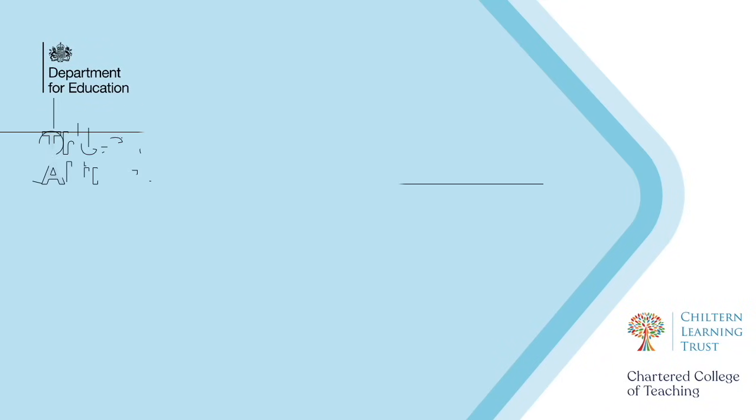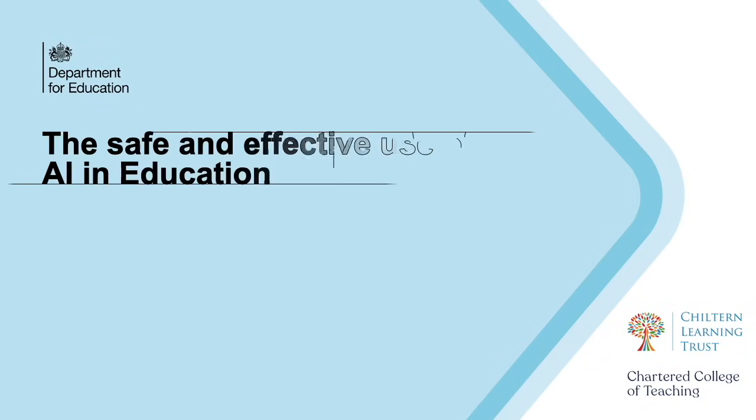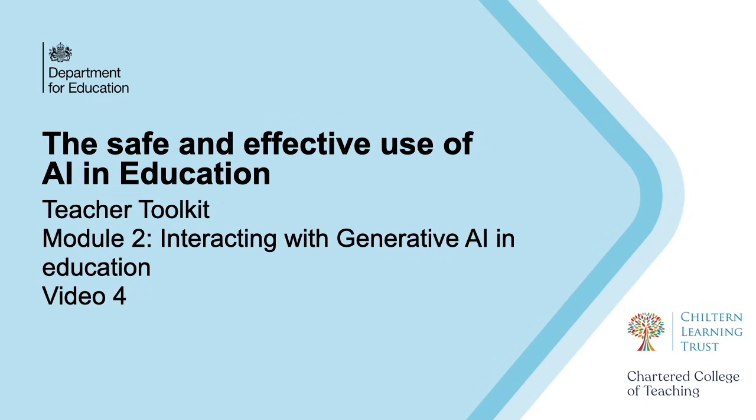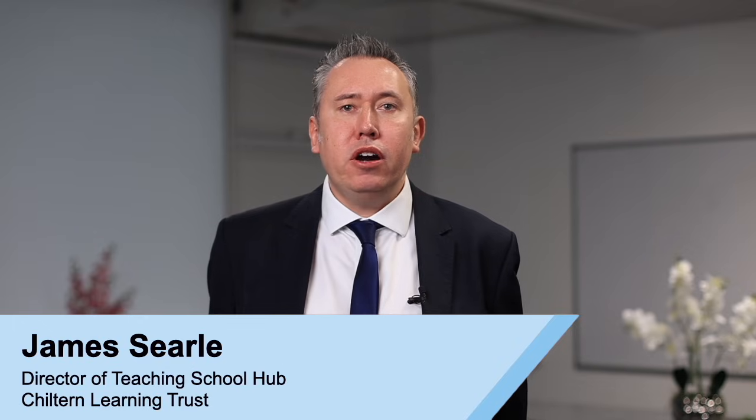Welcome to Module 2, Video 4, from the Safe and Effective Use of AI in Education Online Resources. Earlier in this module we looked at how high-quality, detailed prompts can lead to higher quality and more useful outputs. The output you get is the result of your prompts being processed by the AI system.